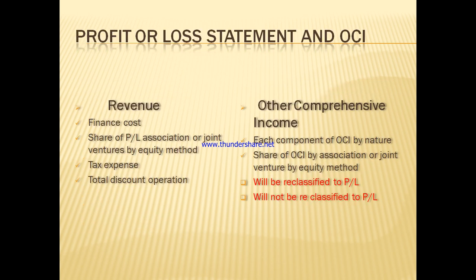The statement of profit or loss includes other comprehensive income (OCI). Comprehensive income covers regular activities and items that may or may not be reclassified to profit or loss. If an entity has comprehensive income, it must present it in the statement.